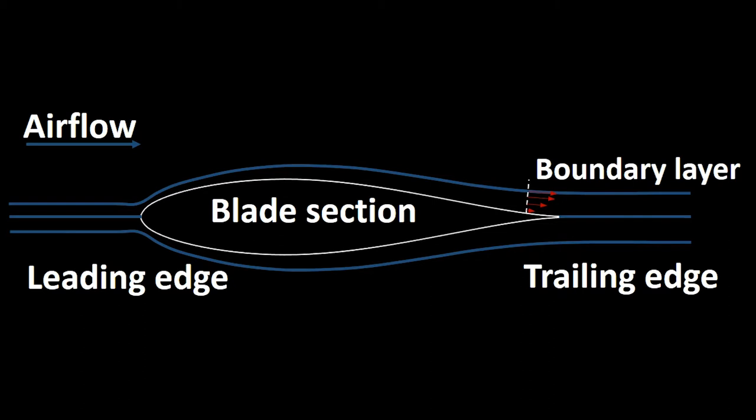At high speeds, the boundary layer presents a turbulent flow, where the airspeed is constantly changing direction and mixing, generating fluctuations of velocity and pressure in time.